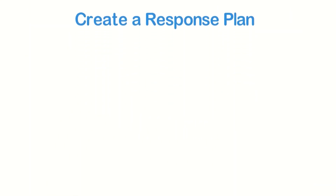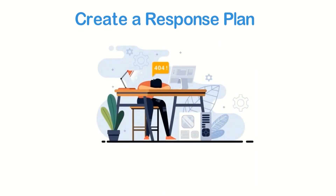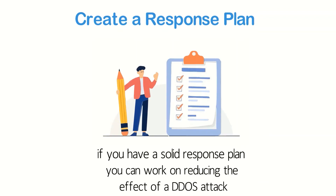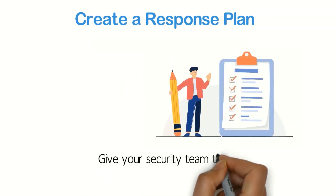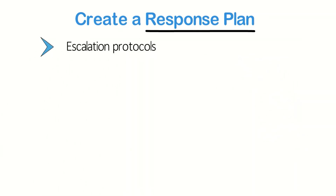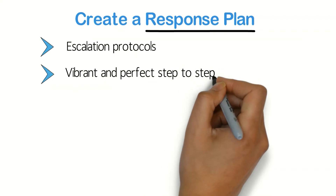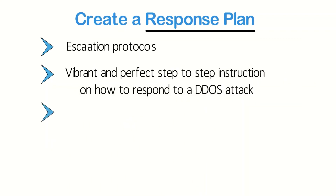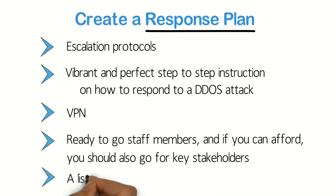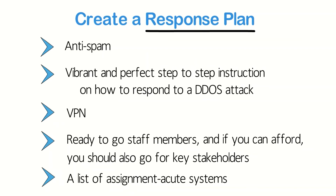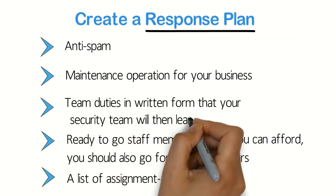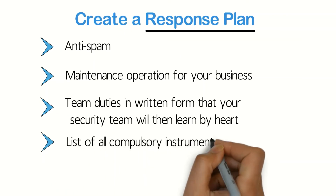Create a response plan: You are helpless during a DDoS attack and only have the option to wait. But if you have a solid response plan, you can work on reducing the effect of a DDoS attack. Give your security team the work of creating a response plan. Your response plan should have these elements: escalation protocols, clear step-by-step instructions on how to respond to a DDoS attack, VPN, ready-to-go staff members, key stakeholders, a list of critical systems, anti-spam, maintenance operations, team duties in written form, and a list of all necessary instruments and tools.